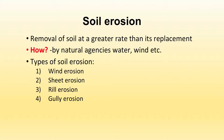There are four different types of soil erosion: wind erosion, sheet erosion, rill erosion, and gully erosion. We will be dealing with all four types in detail.